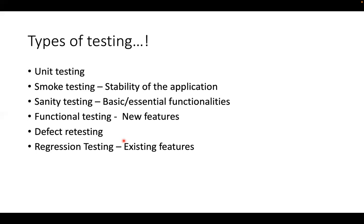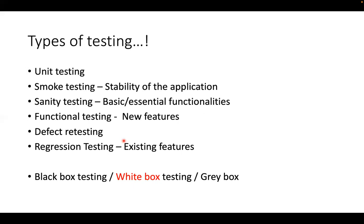In regression testing we test the existing behavior of the application and ensure nothing has changed. Testing can also be categorized as black box testing — testing without knowing the backend code; white box testing — testing code branches directly, like line coverage or branch coverage; and gray box testing, which involves both black box testing and database or code-related testing. For instance, verifying database entries along with front-end actions is gray box testing. This is a quick recap of testing types.